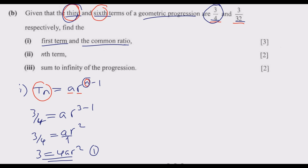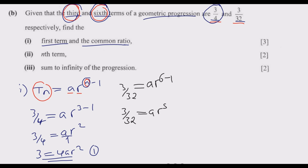For the sixth term: 3/32 = a × r⁵. Cross-multiplying gives 3 = 32ar⁵. This is equation 2. We now have two simultaneous equations: 3 = 4ar² and 3 = 32ar⁵.